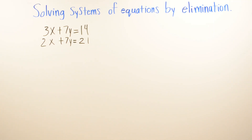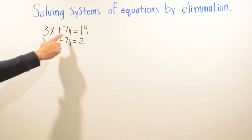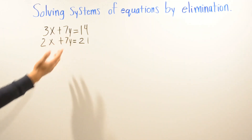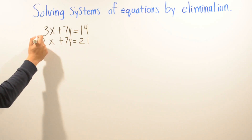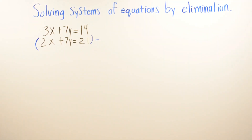We're going to look and see if there's a common multiple of x or y — you get to choose which one — and you always want to use the smallest common multiple possible. Here we got lucky because we can see that we have two numbers that are the same: 7y and 7y. So I'm going to turn one of those into a negative to be able to eliminate variable y.